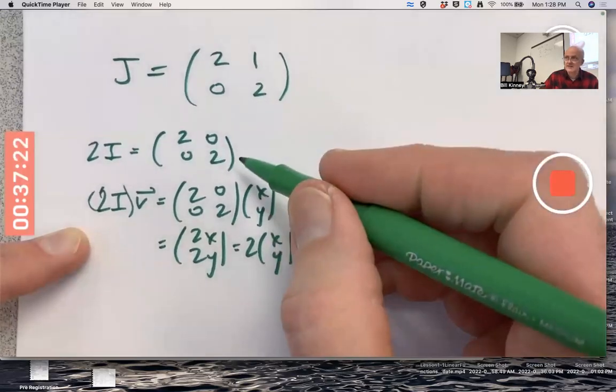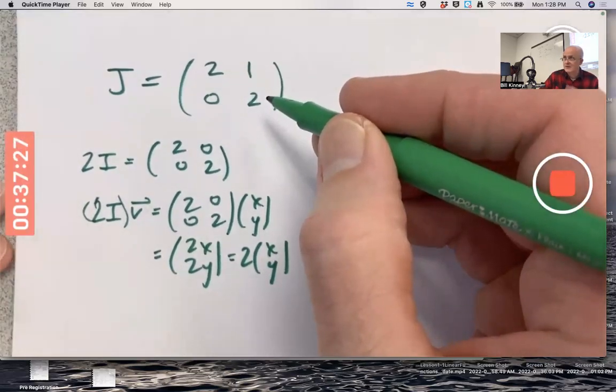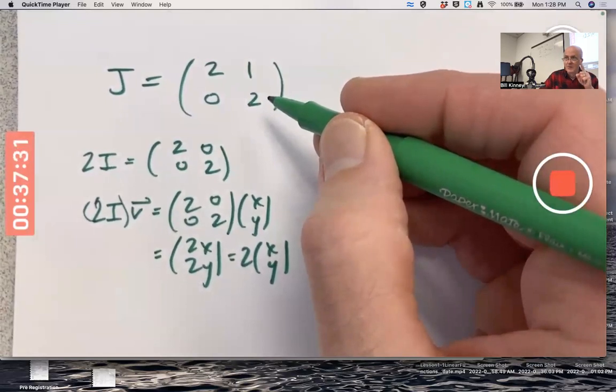So this does have a basis of eigenvectors, but this one doesn't. And you could try to find the eigenvectors and see you're only going to get one line of eigenvectors. Only one linearly independent eigenvector would not be a basis for the plane.